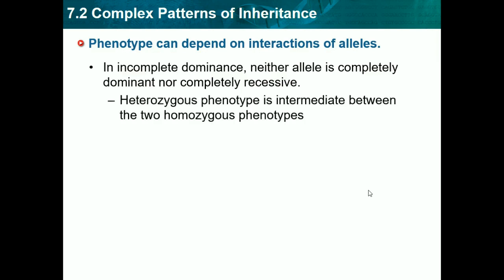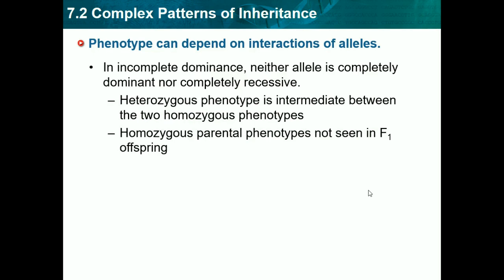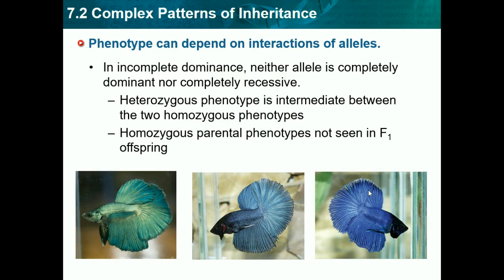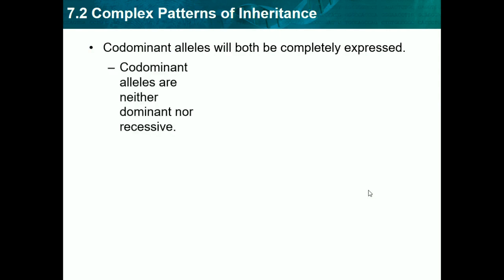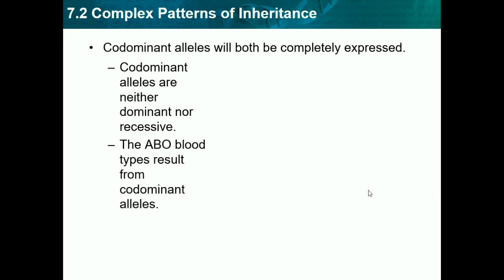With incomplete dominance, the heterozygous phenotype is intermediate between the two homozygous phenotypes, and the homozygous parent phenotypes are not seen in the F1 offspring. Codominant alleles will both be completely expressed — codominant alleles are neither dominant nor recessive.